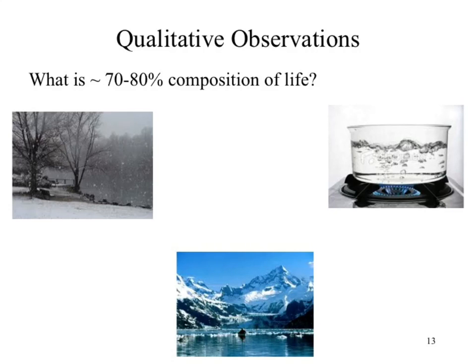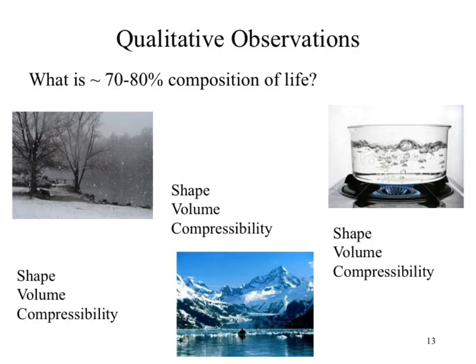Water is a nice example to work with. If we get cold enough, we can see snow, which is solid water. As we warm up, we get liquid water. Warm it further and we get gaseous water. So we have three phases to make observations about, which we can then apply to other types of matter. The general trends we look at are shape, volume, and compressibility.